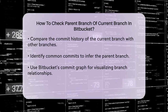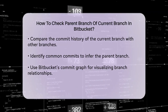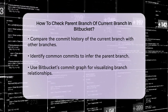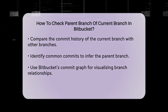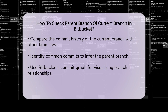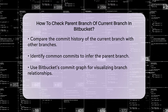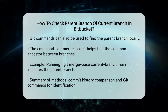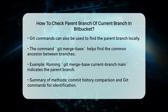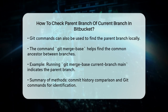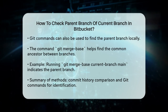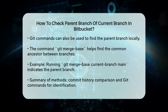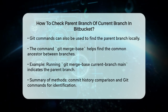Another approach is to use Git commands locally. You can use 'git merge-base' to find the common ancestor between two branches, which can help you identify the parent branch. For instance, if you run 'git merge-base current-branch main', it will show you the common commit, indicating that main is likely the parent branch.